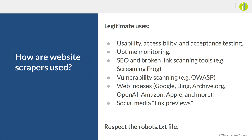Every time you do usability, accessibility, or acceptance testing, you're using a website scraper. Uptime monitoring — when you use 24x7, that is essentially a robot hitting your website seeing if it's on. SEO and broken link scanning tools like Screaming Frog — that is a bot. Vulnerability scanning like OWASP ZAP, web indexes like Google, Bing, archive.org, OpenAI — which is essentially a really complex search engine — Amazon, Apple, and more. Social media previews are also website scrapers: that image and description is Facebook or the site formerly known as Twitter going out, grabbing that information, and displaying it as a preview.